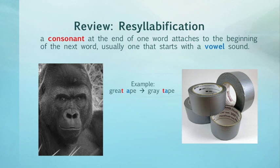To review: with re-syllabification, a consonant at the end of one word attaches to the beginning of the next word, usually one that starts with a vowel sound. A final example: 'great ape' can sound like 'gray tape'.